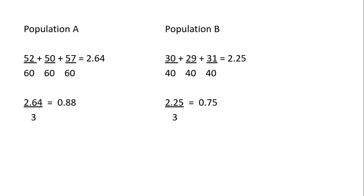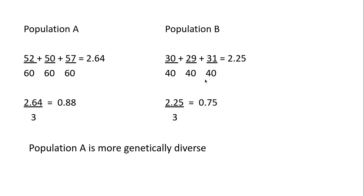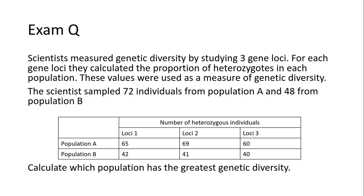Doing the same for population B gives 0.75, so population A is more genetically diverse. Note that I used 40 as the denominator for population B because 40 individuals or loci were looked at for that population, versus 60 for population A. Here's another example — pause it and have a go before I show the answer on the next slide.